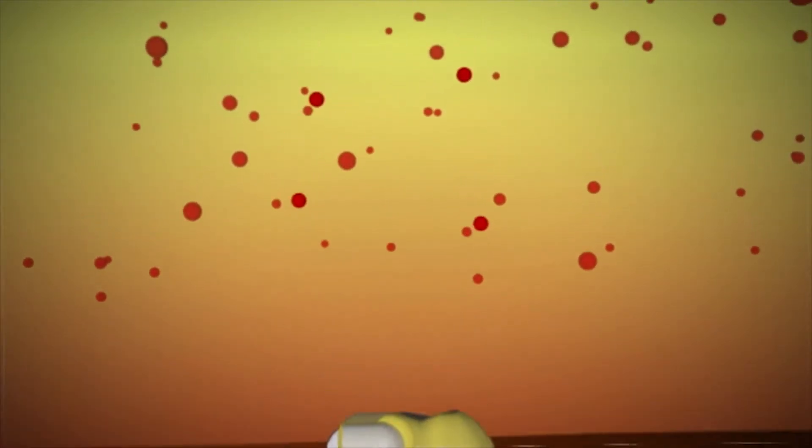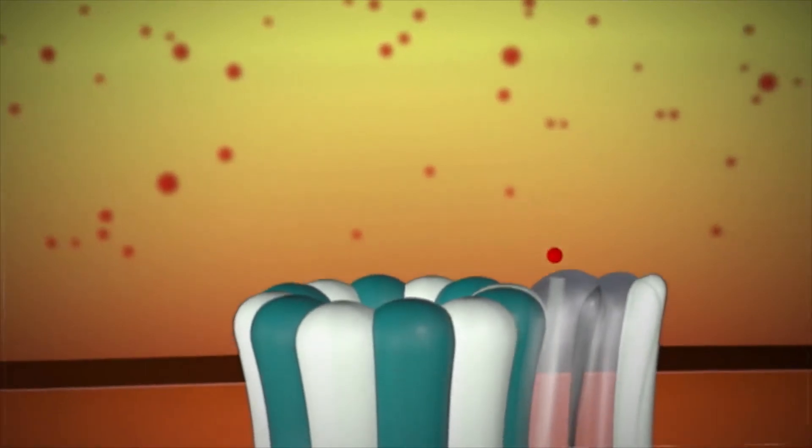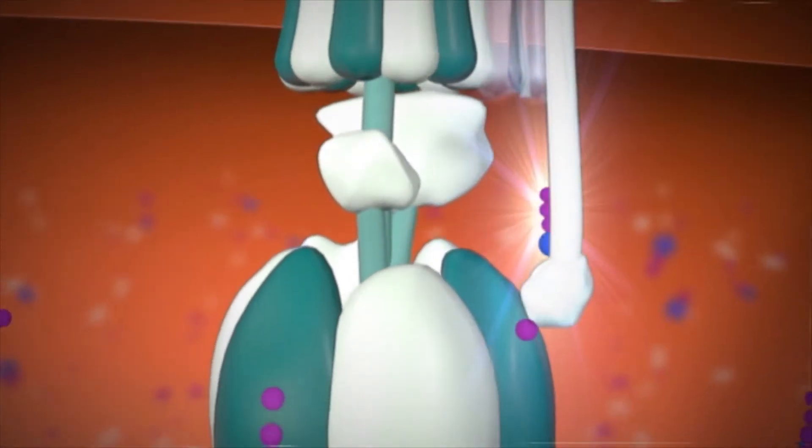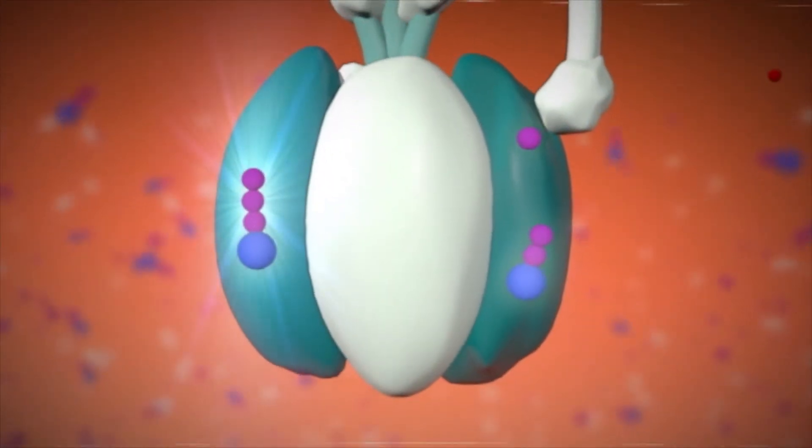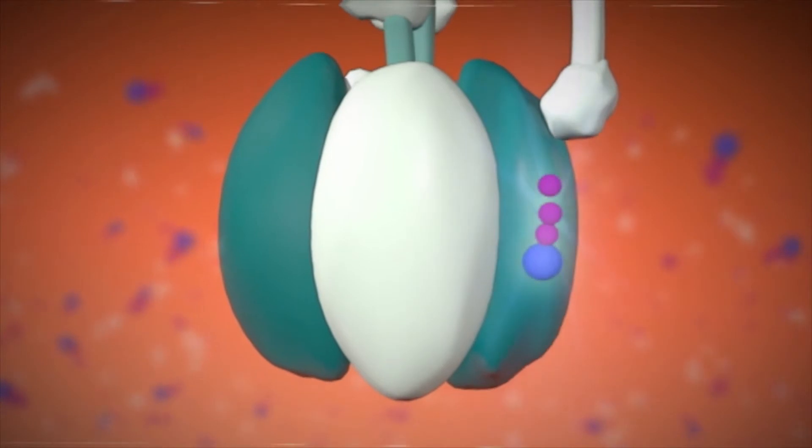The electron transport creates a gradient of protons from the intermembrane space to the matrix. And through the energy of this gradient, ADP is converted into ATP, the only way to store and provide energy that is readily available to the cell.